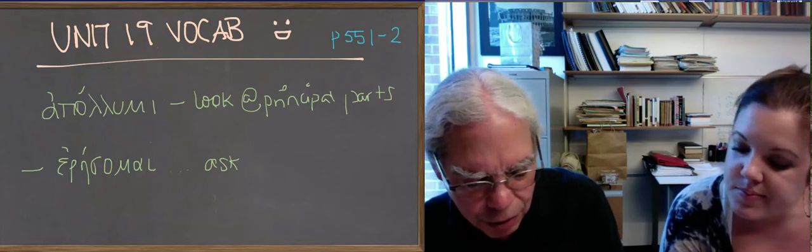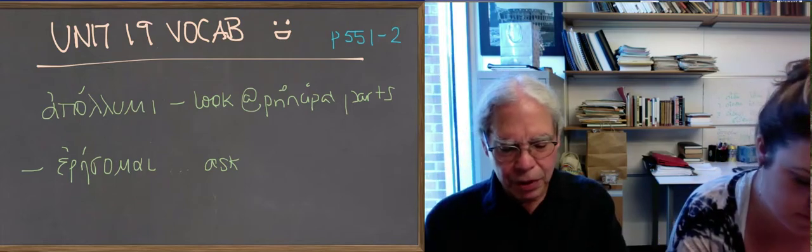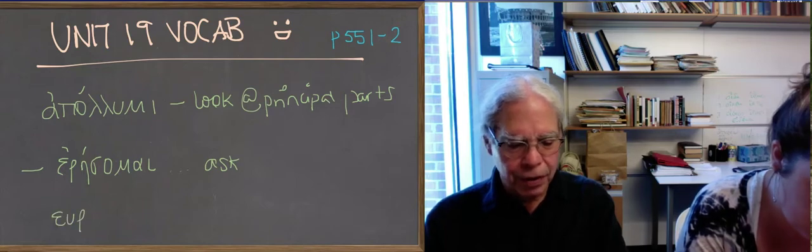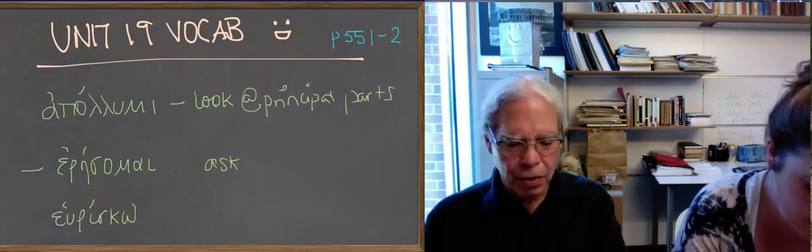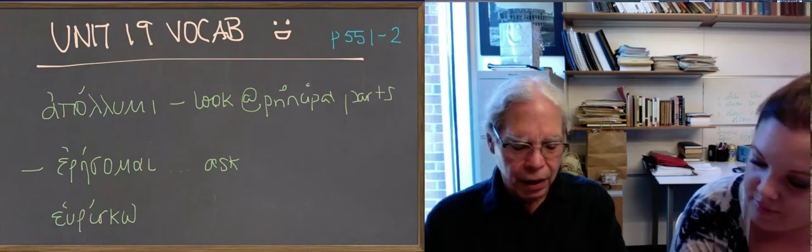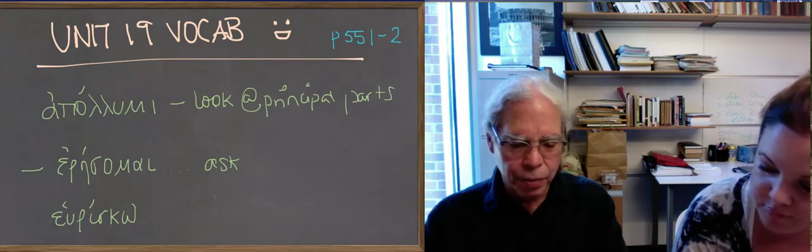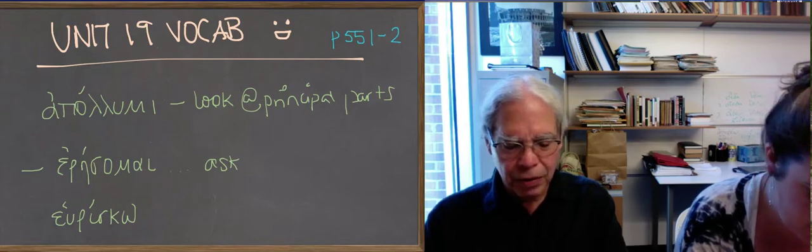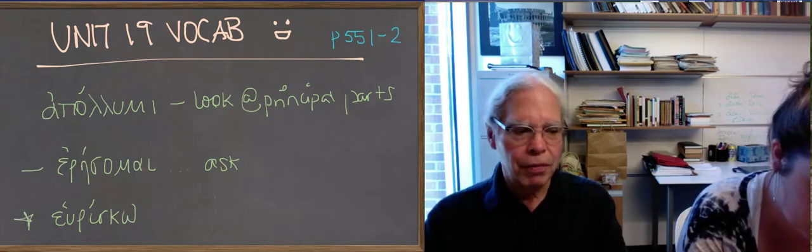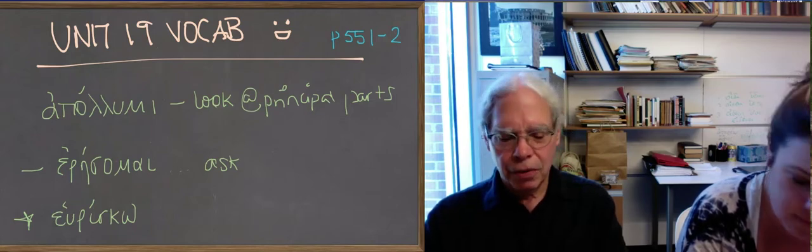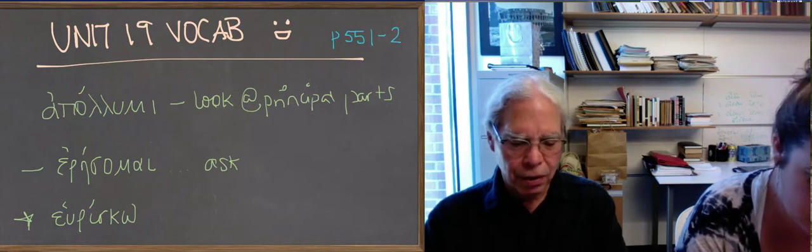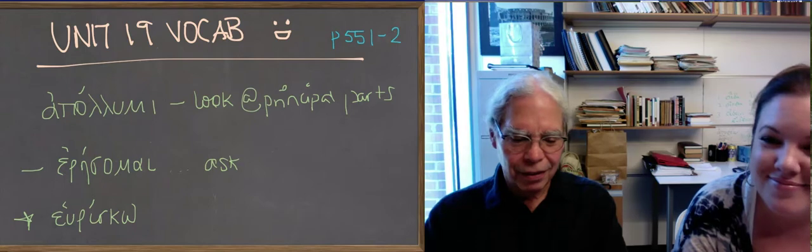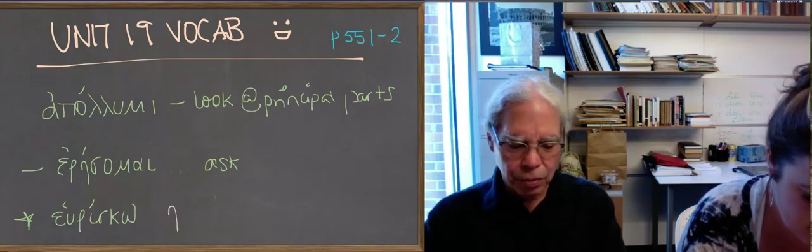The next verb is heurisco, which means find or discover. The perfect of it is a famous thing. Notice that the book gives us the aorist as heuron with an eta, and the perfect as heureka with an eta upsilon. The perfect middle is heuremai, and the aorist passive is heurethane with an eta. In almost every manuscript of Greek that we have, whenever you have heu, you also see a form with an epsilon. So it's not totally clear that Greeks ever said heu. They probably all got simplified to heu.